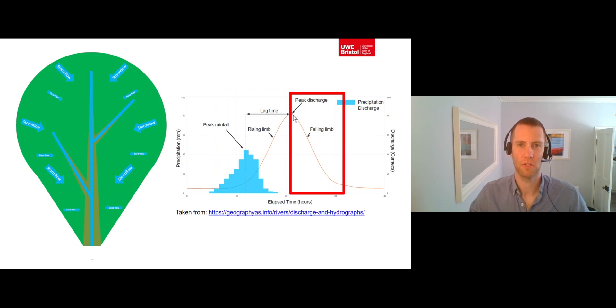Once the peak discharge has passed, the discharge in the river begins to fall, as less and less new storm flow enters the river channel via overland flow and through flow. This decline in discharge is shown by the falling limb of the hydrograph.